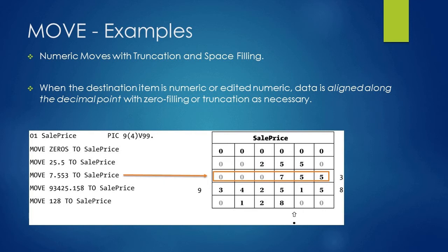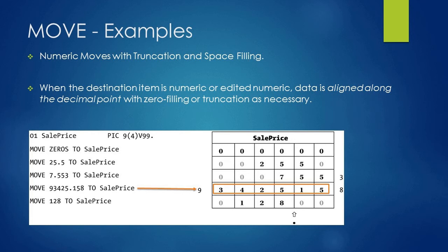Now let's see one more example where we move 7.553 to SALE-PRICE. Only 7 is before the decimal, so 7 is placed on digit 4, and digits 1, 2, and 3 are filled with zeros. After the decimal, 5 is placed on the fifth digit, another 5 on the sixth digit, and 3 is truncated as there is no space to hold that value.